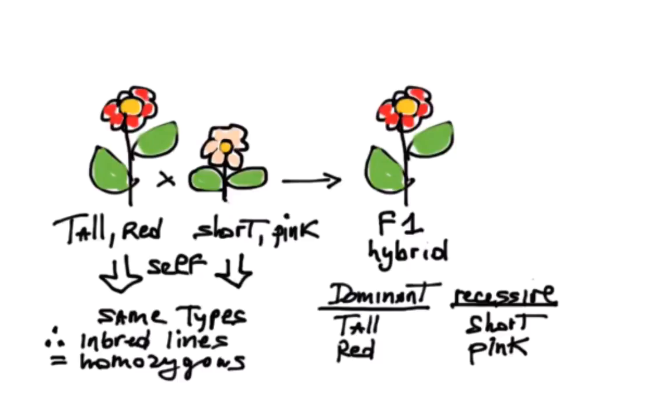The tall red parent is big T big T big R big R, that is homozygous for the big T and the big R. The short pink parent is little t little t little r little r, that is homozygous for the recessive alleles.